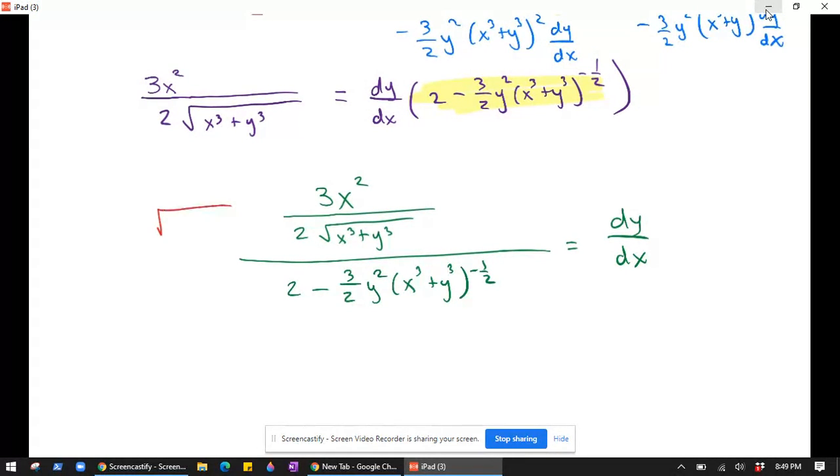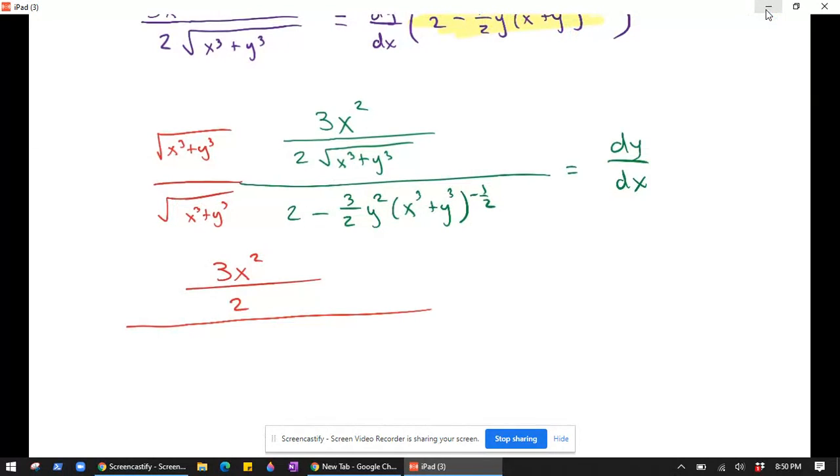So I'm going to multiply the top and the bottom by the square root of x cubed plus y cubed. It'll make it look a little nicer. So then the top becomes 3x squared over 2, and then the denominator becomes 2 square root of x cubed plus y cubed minus 3/2 y squared. And that's it, because the square root of x cubed plus y cubed is going to divide the x cubed plus y cubed to the negative 1/2.